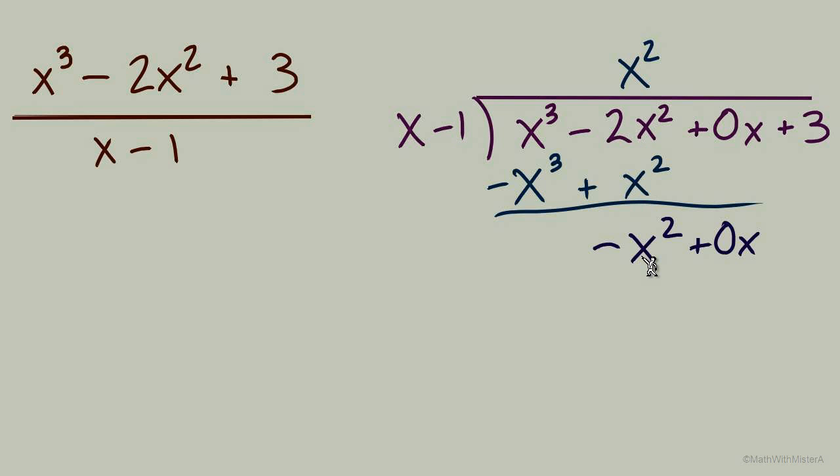Down this column, we have negative x squared, and I'm bringing down 0x. Next round is this x times what equals negative x squared. So we have a result of negative x in the quotient. Multiply back down, negative x squared, and the negative x times negative 1 is a positive x. A subtract, so I'll do flip signs and add.